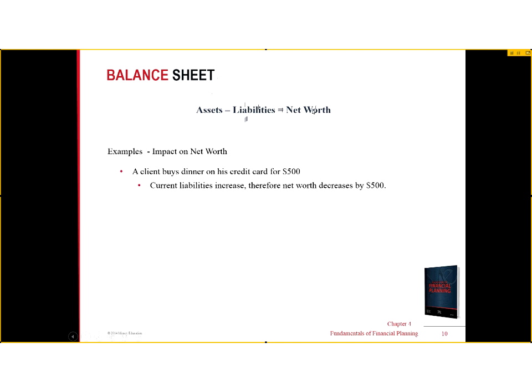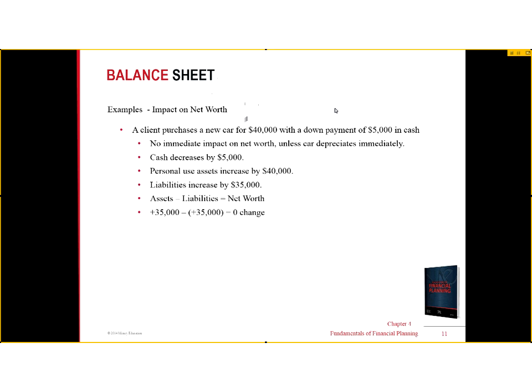Had I bought something that maintained its value — say, a table for $500 on my credit card — I would have an asset increase by $500 and a liability increase by $500, so net worth would remain unchanged. I'd just go from a liquid asset to a non-liquid asset. Then when I paid off my credit card, my liabilities would go down and my liquid assets would go down as well.